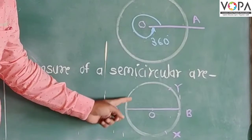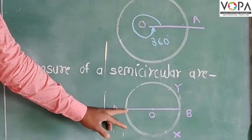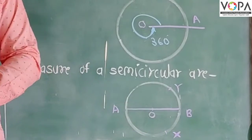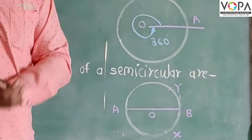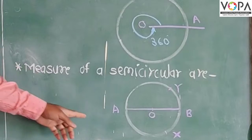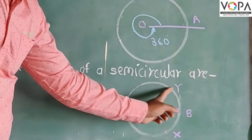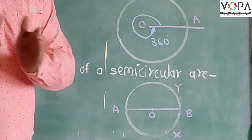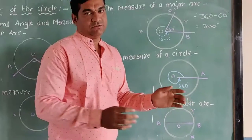See, first part, A, Y, B and second, A, X, B are the two parts of the circle exactly equal. That is why we call this as a semicircular arc. Semi means we divide it to equal parts.